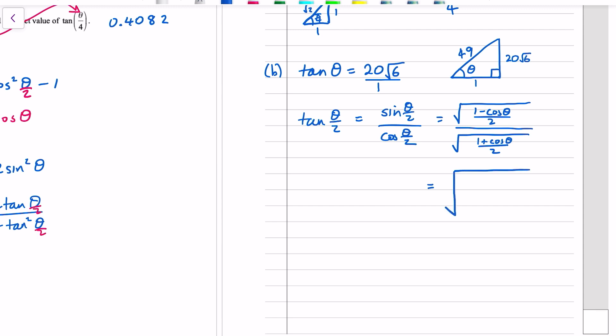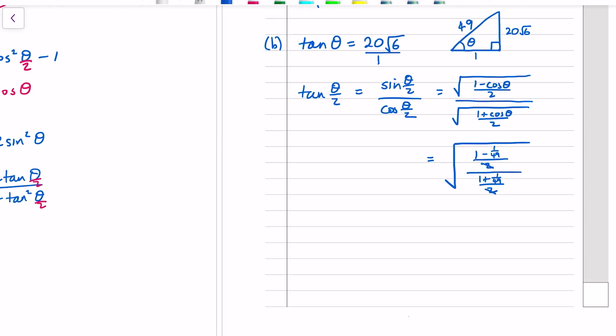We can also put a square root over the whole thing because 2 square roots divided equals that. (1 - 1/49)/2 divided by (1 + 1/49)/2. The 2's cancel and we're left with... Oh wait, it's (1 - cos(θ))/cos(θ), not just the hypotenuse. So that's 48/49 divided by 50/49. So it's the square root of 48/50, which is 24/25.